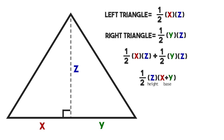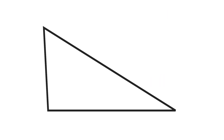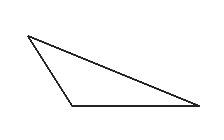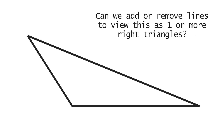Isn't that pretty cool? It's the same formula, and now we've done it for right triangles and for acute triangles. So what about that third type — the obtuse triangle? Let's take a look. What was the technique that worked so well for the right triangle and the acute triangle? It was adding or removing lines to be able to see the shape in a different perspective. We have a formula for right and acute triangles — what can we do to this obtuse triangle to view it differently? I encourage you to pause the video and take a moment to think about that.